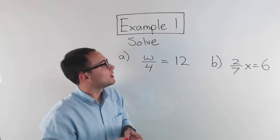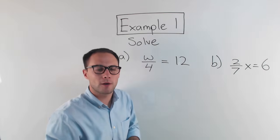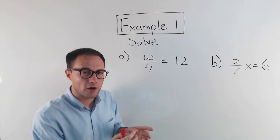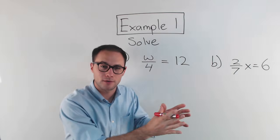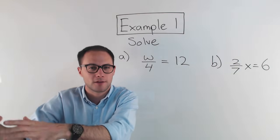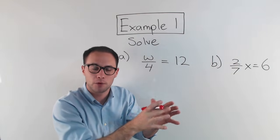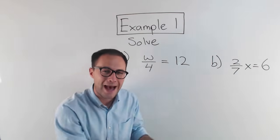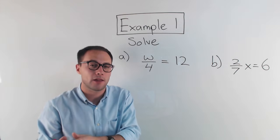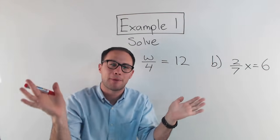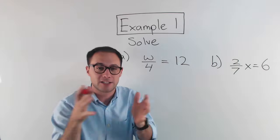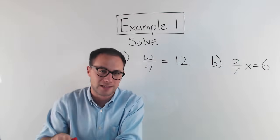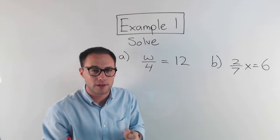Alright, here's our first example. But before we get to these, I just want to go over what we learned in our last video when solving equations. Remember, the whole goal of solving equations is to get the variable alone — the variable equals something on the other side. Another thing to remember is that anything you do to one side, you have to do the exact same thing to the other. If you don't, the equation will not be balanced.